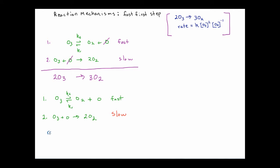In a series of elementary steps, we write the rate law directly from the slow step or the rate determining step, so we would be writing the rate law from step number two. The rate law would be: rate equals the rate constant times the concentration of O3 times the concentration of O. When you compare it to the rate law that was determined experimentally, you can see that we have a problem — the two of them don't match up. You could argue we're done because this has failed the second criteria. However, we have a different situation here because we have an initial step which is fast and followed by the rate limiting step.